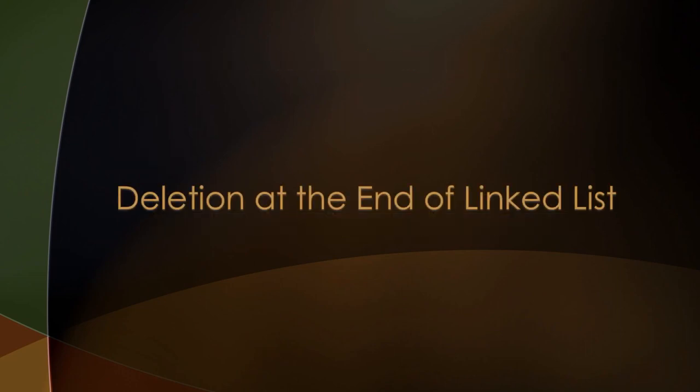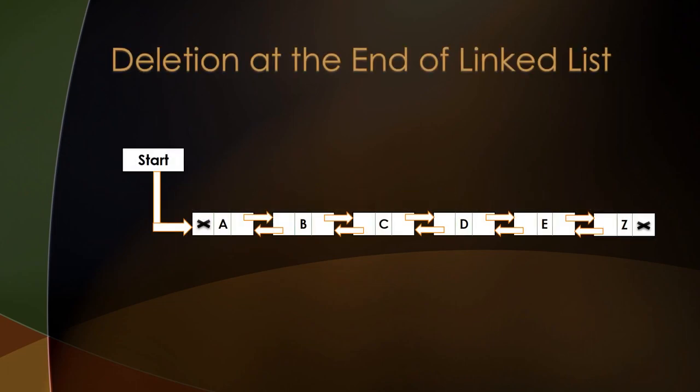The last operation is deletion at the end of a linked list, which is the easiest way to delete a node. We'll delete node Z from the end of the linked list. Only one thing needs to be done: change the next pointer of node E into a null pointer. This is how the linked list looks after the deletion of node Z. Due to garbage collection, the node will be automatically deleted in managed languages.